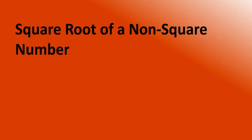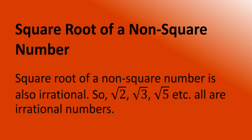Square root of a non-square number is also irrational. So square root of 2, square root of 3, square root of 5, and so on are all irrational numbers.